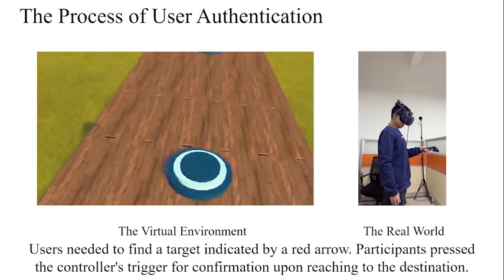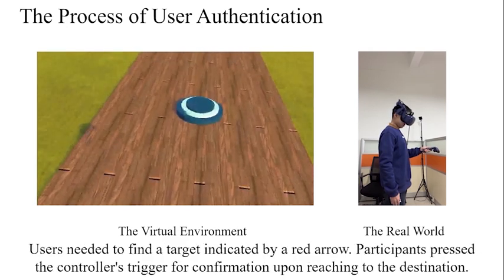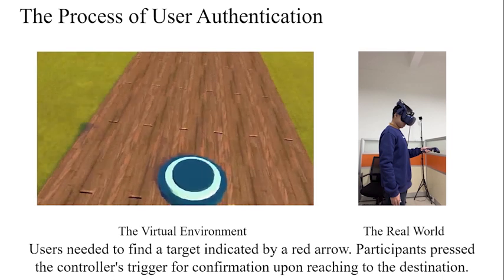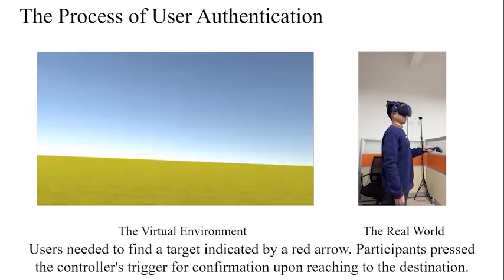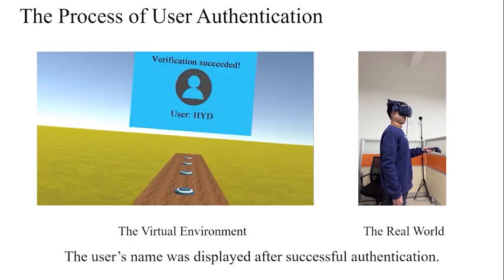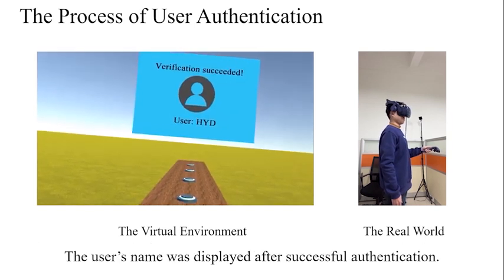Users needed to find a target indicated by a red arrow. Participants pressed the controller's trigger for confirmation upon reaching the destination. The user's name was displayed after successful authentication.